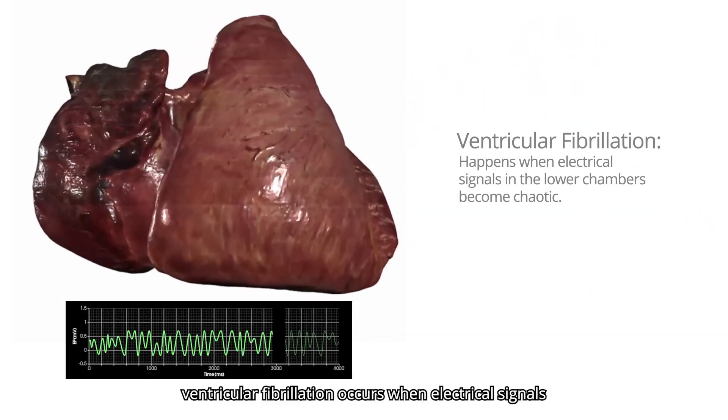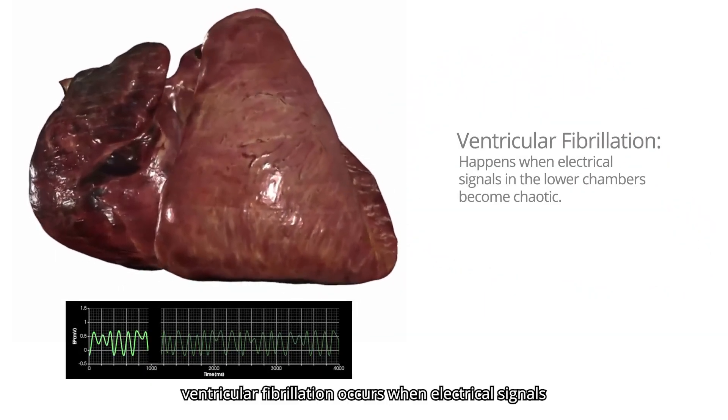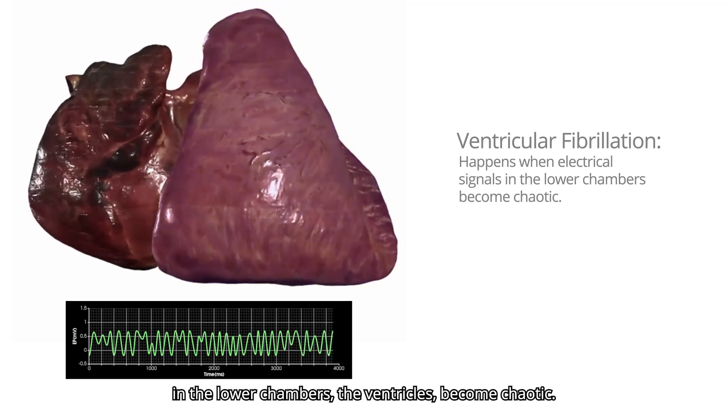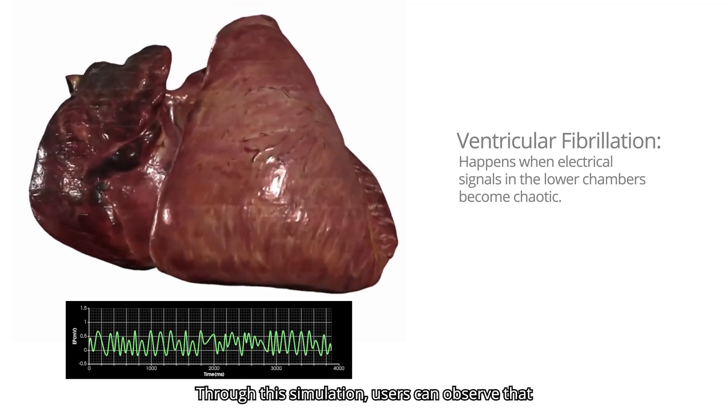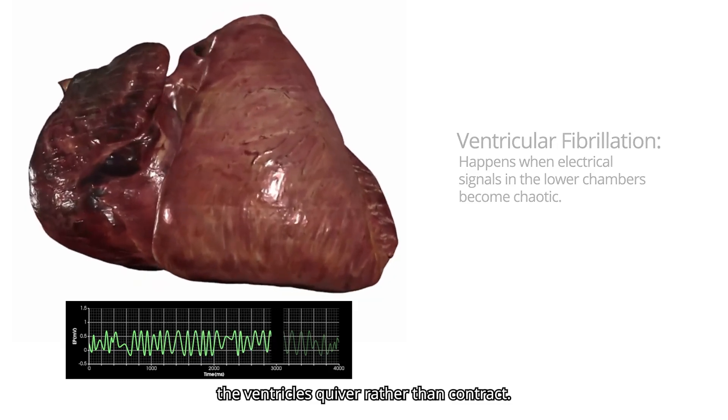Similarly, ventricular fibrillation occurs when the electrical signals in the lower chambers, the ventricles, become chaotic. Through this simulation, users can observe that the ventricles quiver rather than contract.